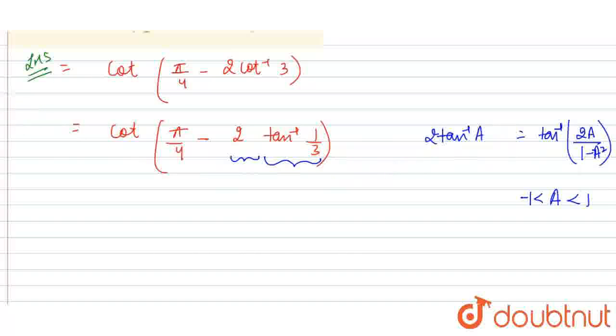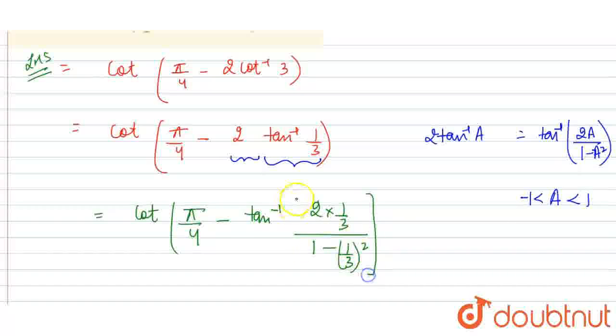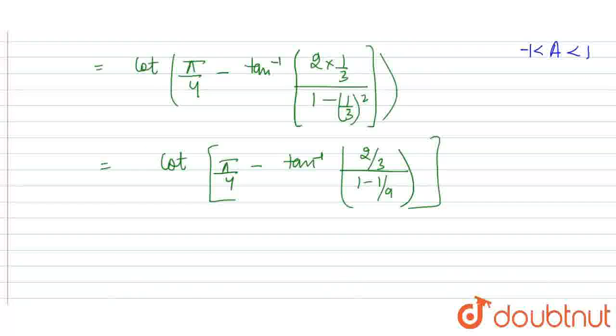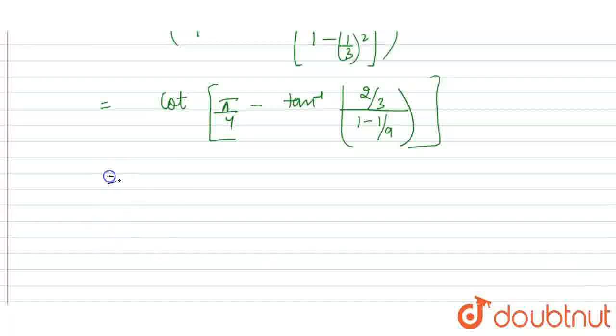So, 2 tan inverse A. Now, we are going to apply it over here and we are going to get: This is cot 5/4 minus tan inverse 2 times 1/3 upon 1 minus 1/3 whole squared. Now, bracket close. Now, that equals cot 5/4 minus tan inverse 2/3 upon 1 minus 1/9.